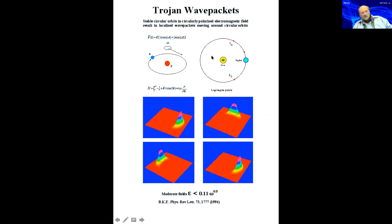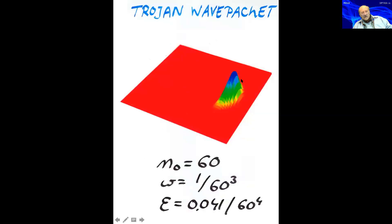We call them Trojan wave packets because the classical mechanics is very similar to the dynamics of the Trojan asteroids, which are generated by the time-dependent gravitational field of the Sun-Jupiter system. This is a Trojan wave packet for n equals 60. This quantum number means that the main component of the packet is around the hydrogen eigenstate of principal quantum number 60.